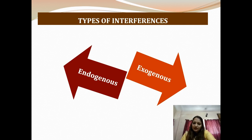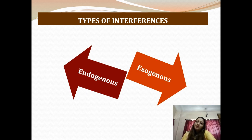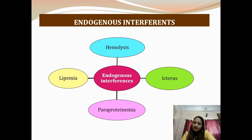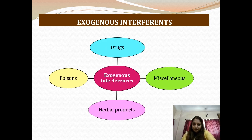The types of interferences are either exogenous — from materials not expected to be found naturally in the human body — or endogenous. Today's discussion will be restricted to endogenous interferences, which include hemolysis, lipemia, and icterus as the three most common. In addition, paraproteinemia is another common source, particularly in patients having plasma cell dyscrasias. Exogenous interferences include poisons, drugs, herbal products, and other miscellaneous items.